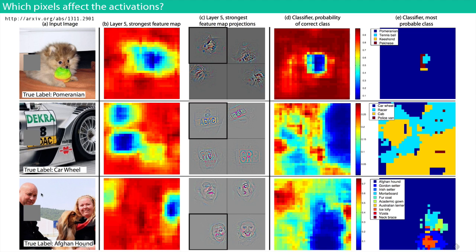Interestingly, if you occlude the person's face in the Afghan hound image, the classification accuracy actually increases. Maybe the presence of another competing object muddles the classification a little bit. Those are sort of neat and kind of funny experiments.